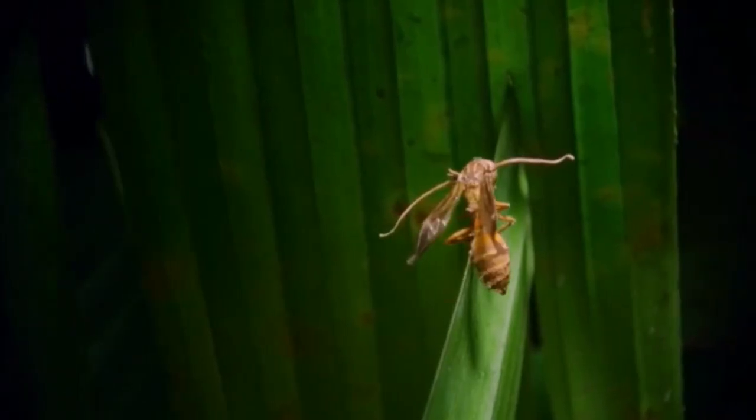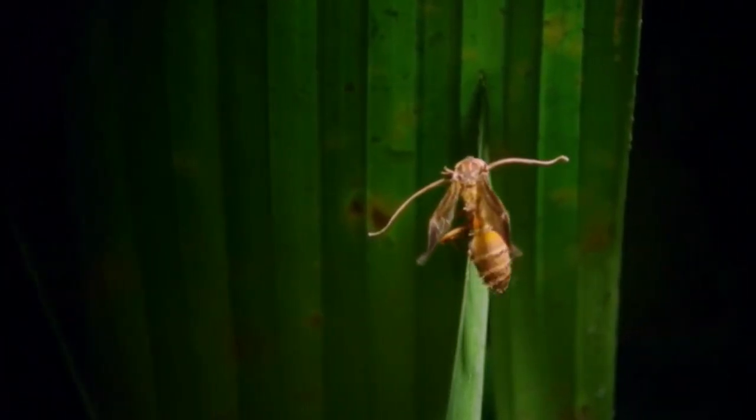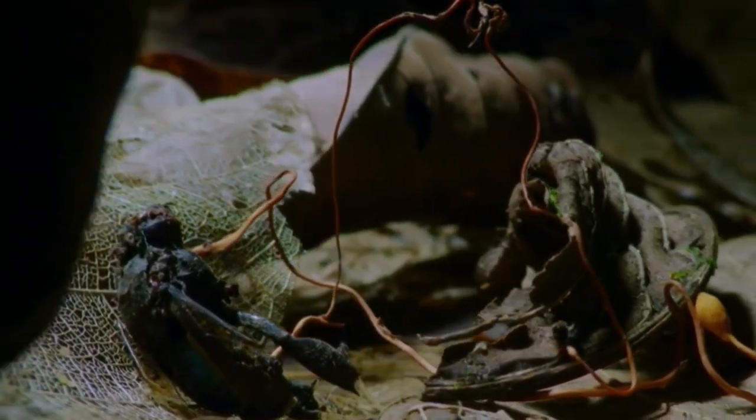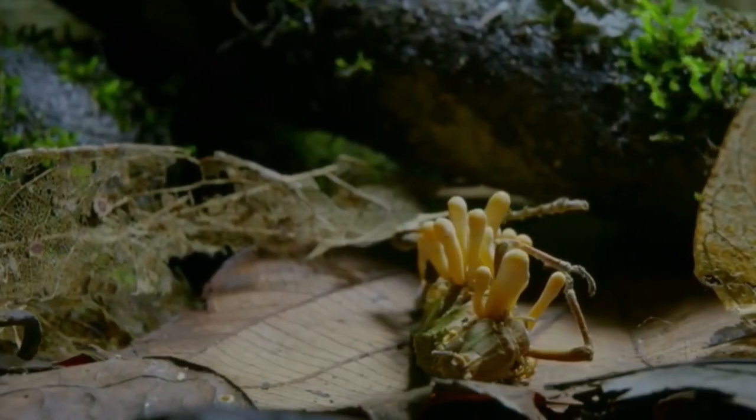A fossil dating back 48 million years proved the age of Cordyceps. There are about 600 different types of Cordyceps which target different insects. Since then, why didn't this furious parasite wipe out the entire species of insects?